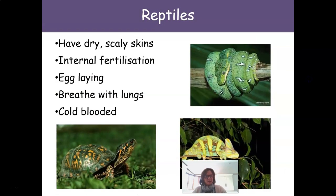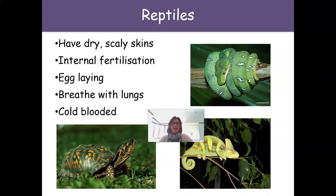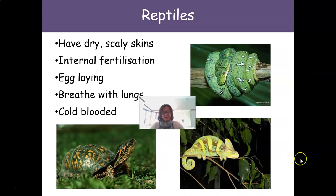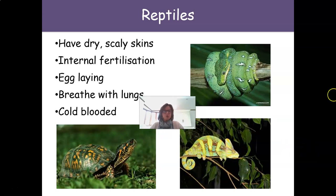Our next group of vertebrates are reptiles. Reptiles have dry, scaly skins, internal fertilization, and are egg-laying. They breathe with lungs and are cold-blooded.